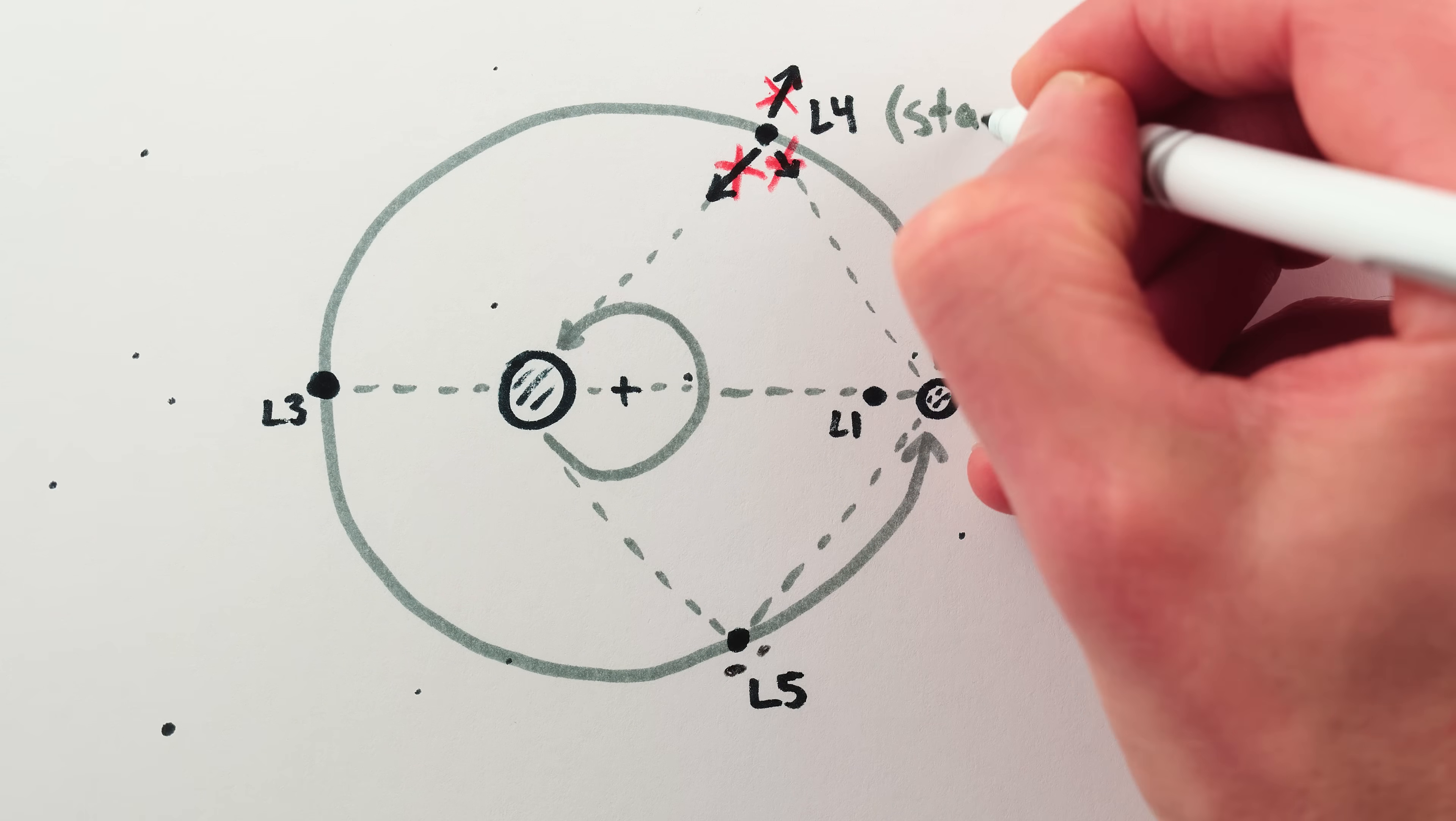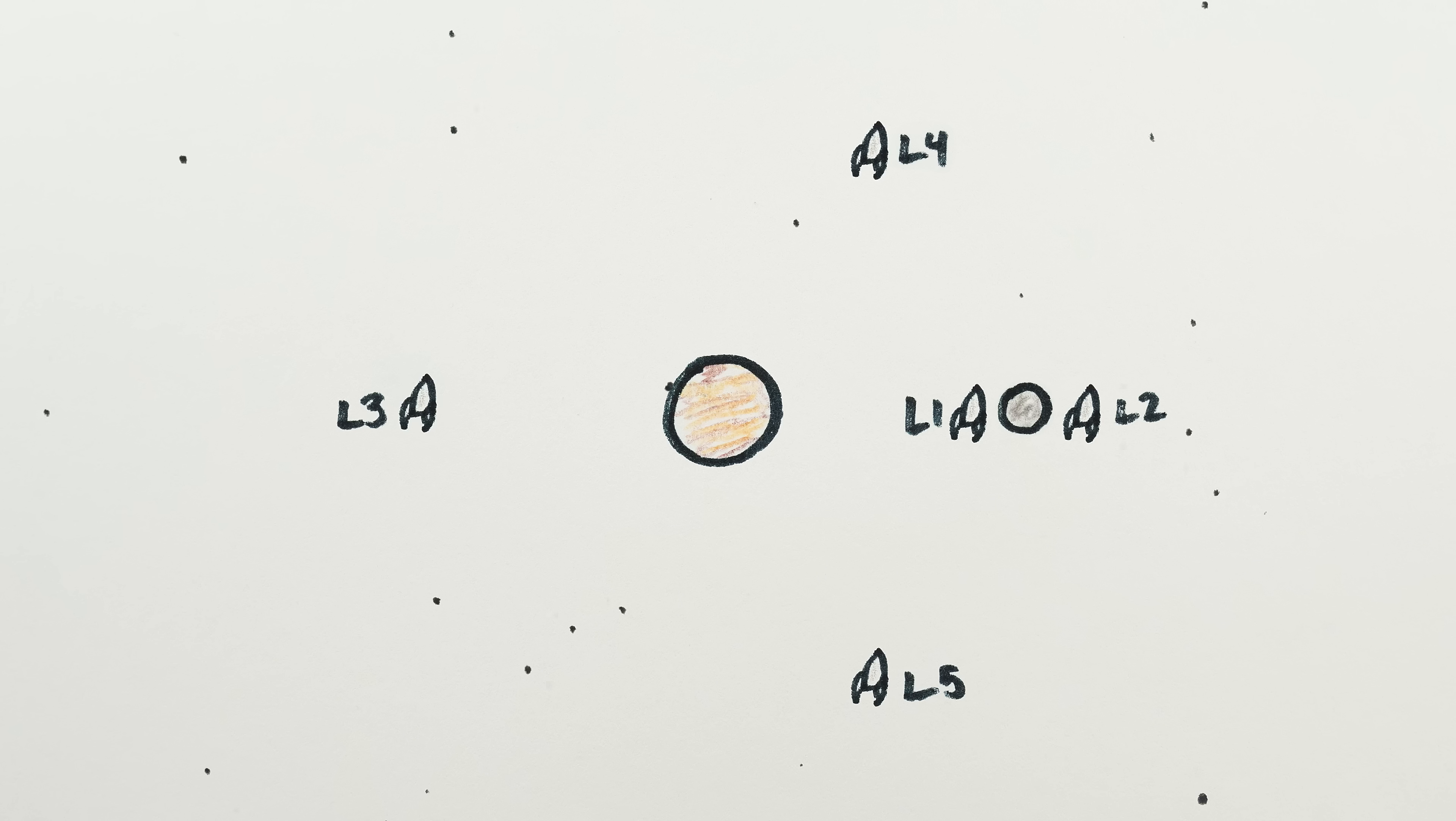But it turns out that only L4 and L5 are what's called stable. If you park your spacecraft near points one, two, or three, it will slowly but eventually drift off and stop orbiting along with the smaller planet or star, or get ejected from the system entirely.